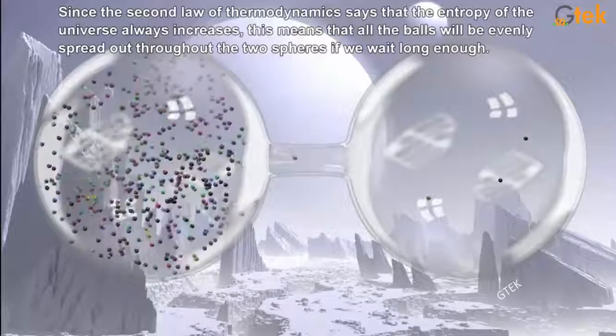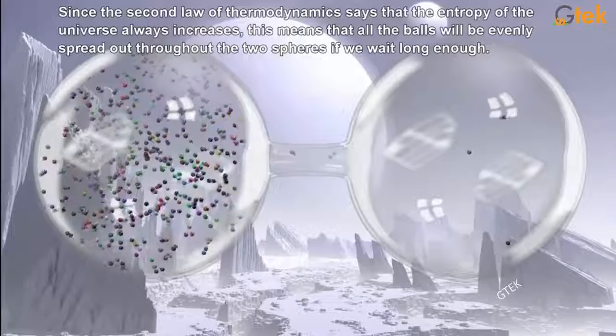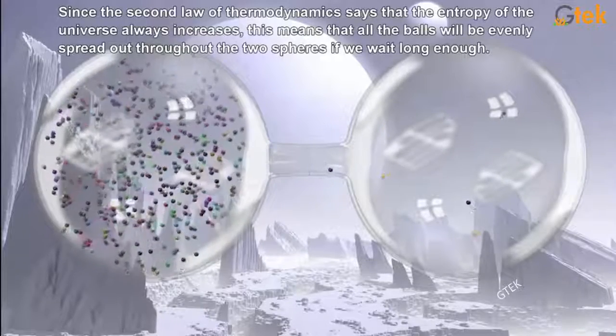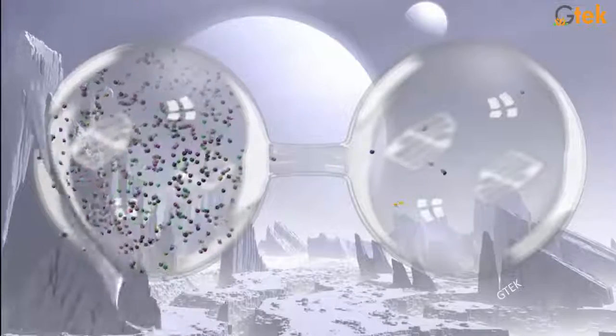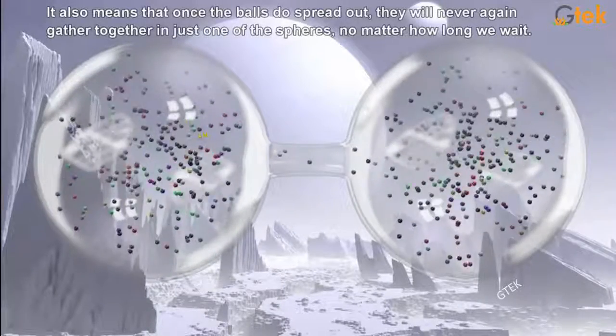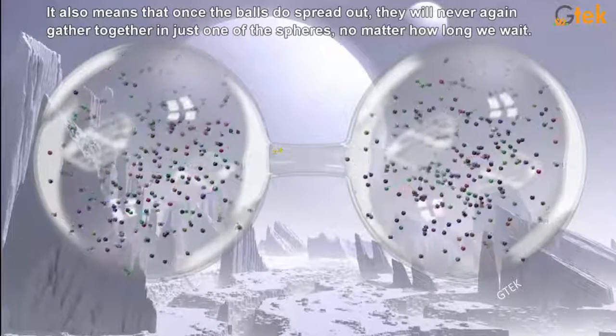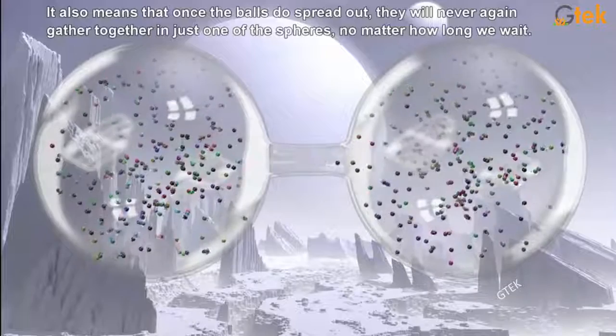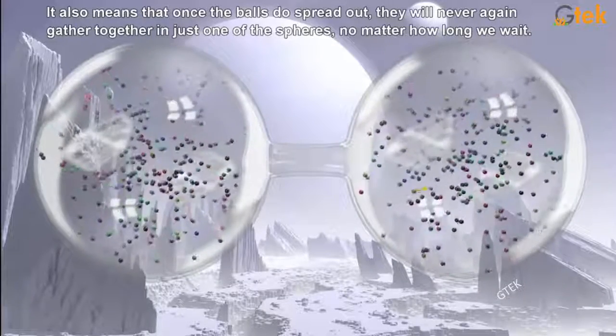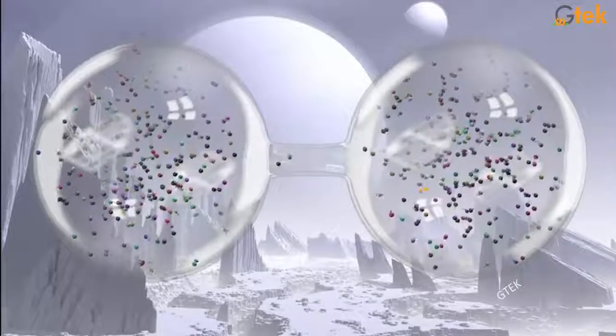Since the second law of dynamics says that the entropy of the universe always increases, this means that all the balls will be evenly spread out throughout the two spheres if you wait for long enough. It also means that once the balls do spread out, they will never again gather together in just one of the spheres, no matter how long we wait.